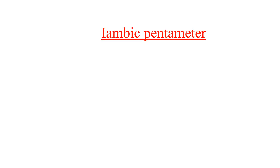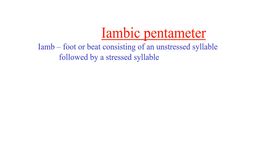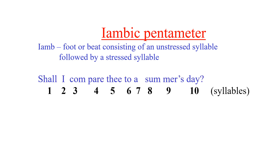Iambic pentameter is a metrical line used in traditional English poetry and is the meter Shakespeare nearly always used. An iamb is a foot or beat consisting of an unstressed syllable followed by a stressed syllable. For example, the first line of Sonnet 18, 'Shall I compare thee to a summer's day,' contains 10 syllables.